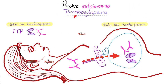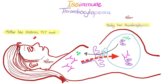Let's recap: In passive autoimmune thrombocytopenia, mommy had ITP with pre-existing antibodies against her own platelets. Those antibodies crossed the placenta, went to the baby's blood, and destroyed the baby's platelets — now both have thrombocytopenia. In isoimmune thrombocytopenia, the mother is fine with normal platelets, but she was triggered by an unknown antigen on the baby's platelet acquired from the father. The antigens cross the placenta, trigger her immune response, and she forms brand new antibodies that cross back and attack the baby's platelets — the baby has thrombocytopenia but the mother does not.